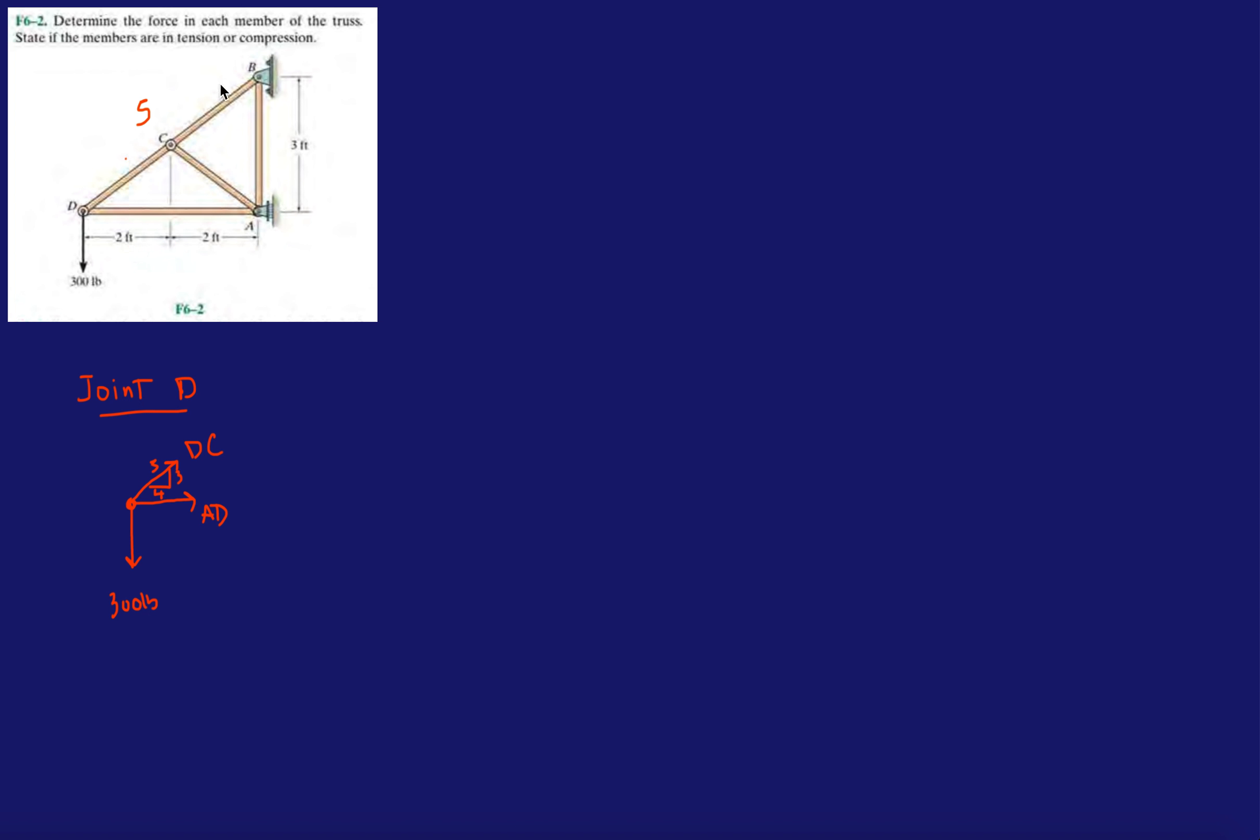And we know this because of this, so this total base is 4, this height is 3, so we know the hypotenuse is 5. So we have one of those special right triangles. Alright, so, with that being said, let's get on with solving this one.